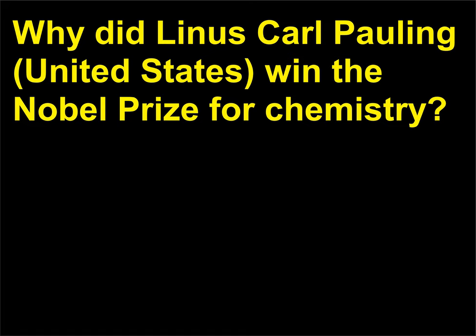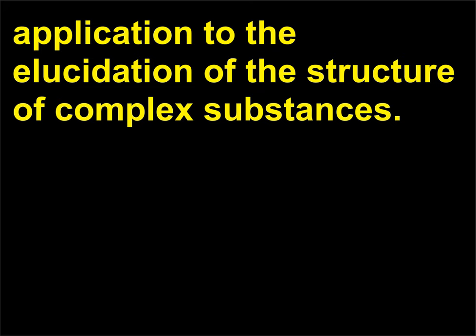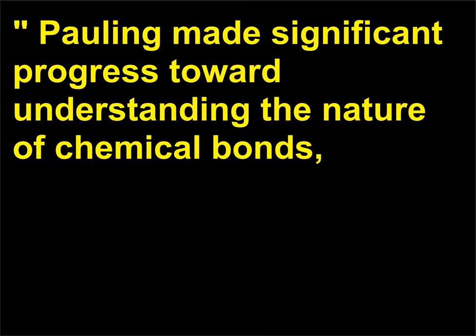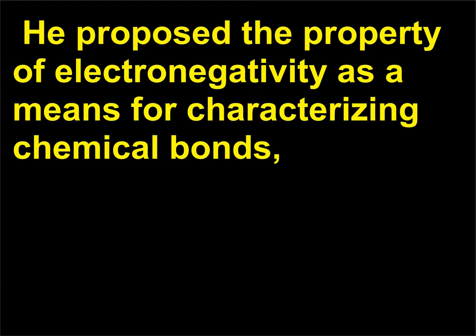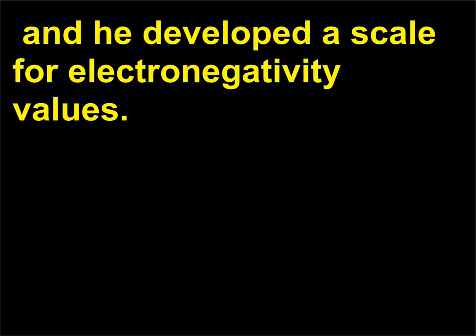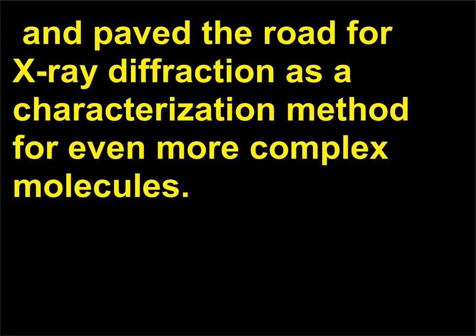For his research into the nature of the chemical bond and its application to the elucidation of the structure of complex substances. Pauling made significant progress toward understanding the nature of chemical bonds, which are obviously relevant to virtually all chemical processes. He proposed the property of electronegativity as a means for characterizing chemical bonds, and he developed a scale for electronegativity values. Pauling's work with X-rays also uncovered the structures of numerous molecules, and paved the road for X-ray diffraction as a characterization method for even more complex molecules.